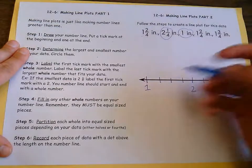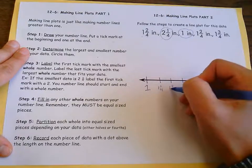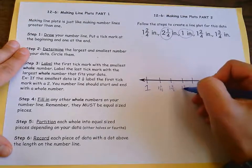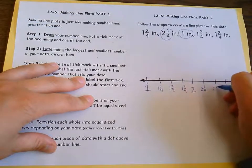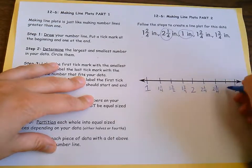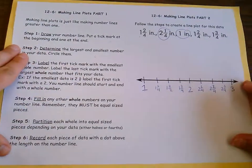And now I need to label those. So this is one, one and one fourth, one and two fourths, one and three fourths, two, two and one fourth, two and two fourths, two and three fourths, three.